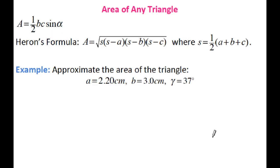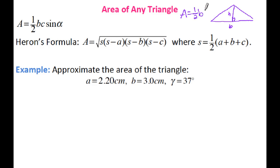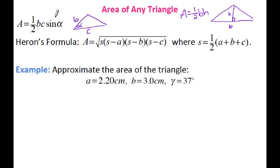Next we're looking at finding the area of any triangle. Usually we do one half the base times the height. But there is a way to solve for the area when you're not given the height. If you're given two sides and the angle between them — a side-angle-side scenario — you can find the area using the formula: one half times side B times side C times sine of the angle between them.